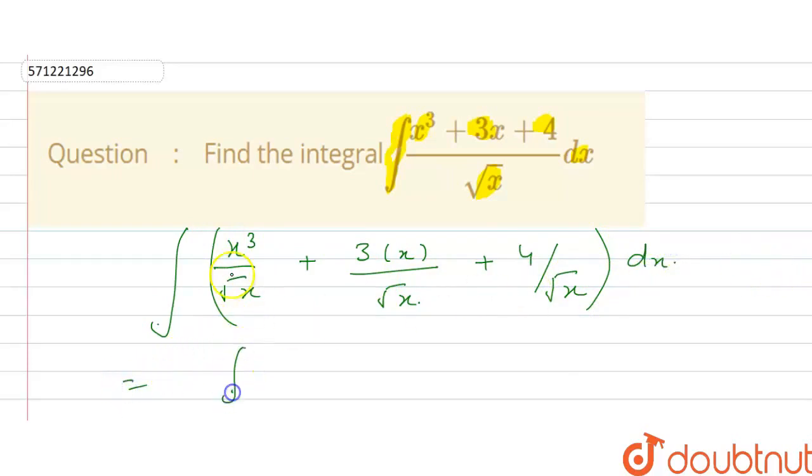So, rearrange it and simplify it. We will get 3 power minus 1 by 2, so we will get here is 5 by 2. So, our power is x power 5 by 2, and plus 3, x power 1 by 2, because 1 minus 1 by 2 - that is 1 by 2, and plus 4, x power minus 1 by 2. And whole bracket of dx.